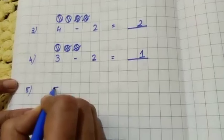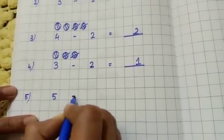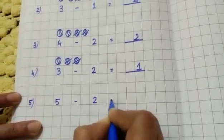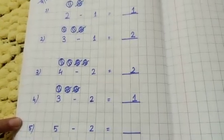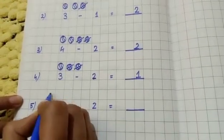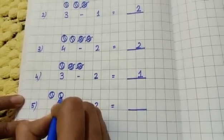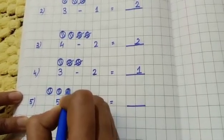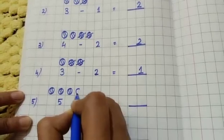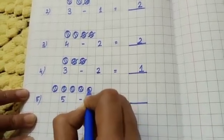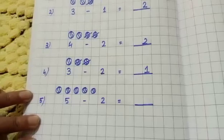Okay, and last one, number five. Five. 5 minus 2 equal to dash. Here I am drawing five balls, one, two, three, four, five.